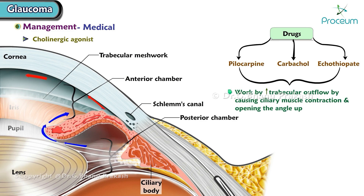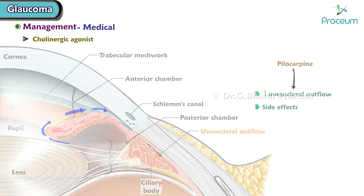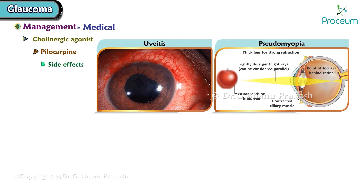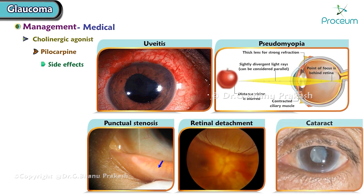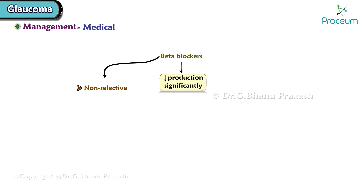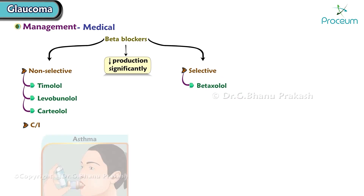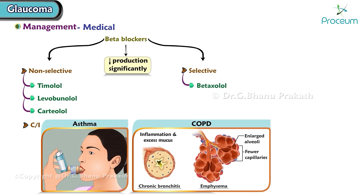Cholinergic agonists work by increasing trabecular outflow by causing ciliary muscle contraction and opening the angle. It is important to note that pilocarpine decreases uveoscleral outflow. Side effects of pilocarpine include uveitis, pseudomyopia, punctal stenosis, retinal detachment, and cataract. Beta blockers work by decreasing aqueous production significantly. Non-selective beta blockers used are timolol, levobunolol, and carteolol. Selective beta blockers used are betaxolol. Beta blockers are contraindicated in asthma, COPD, and arrhythmias.